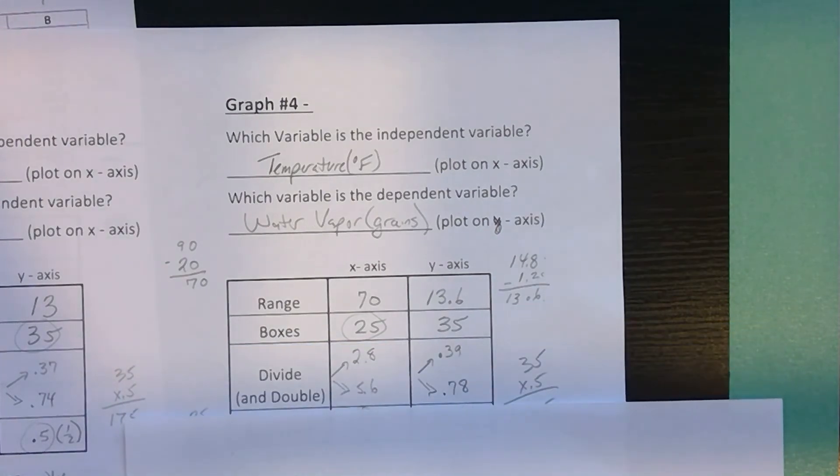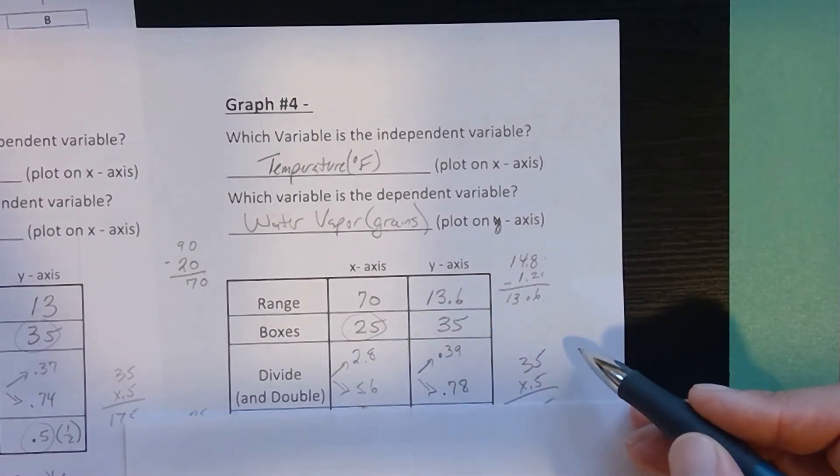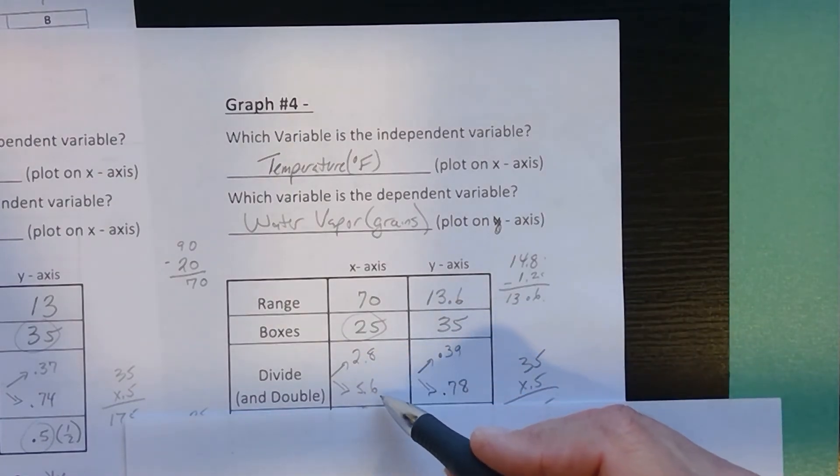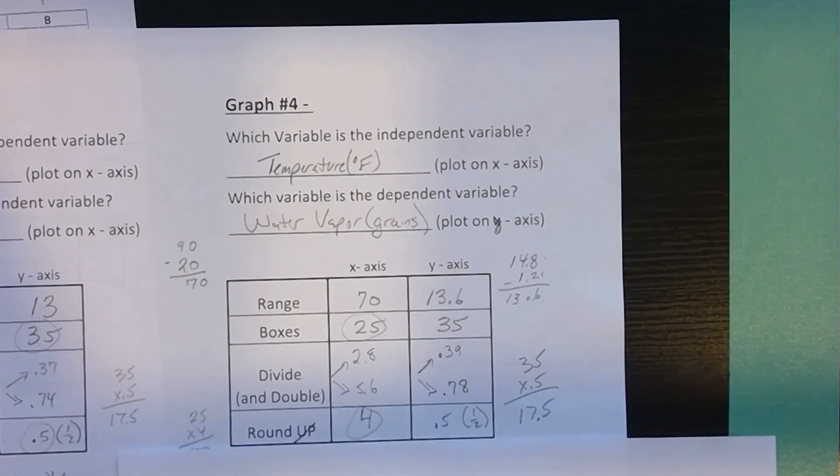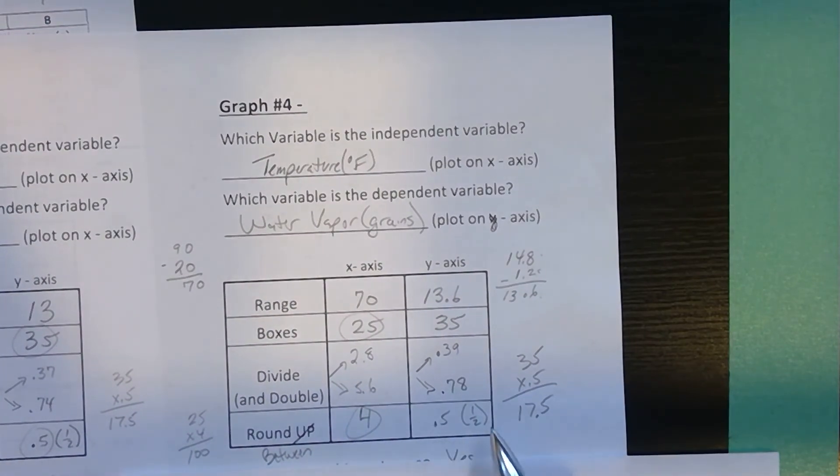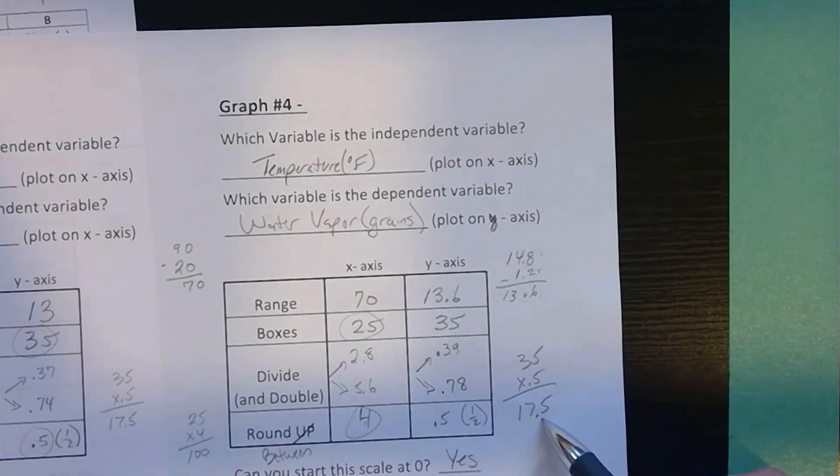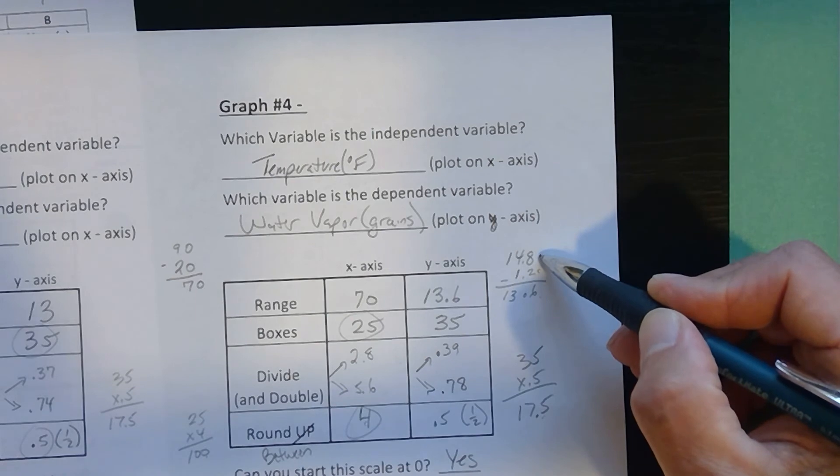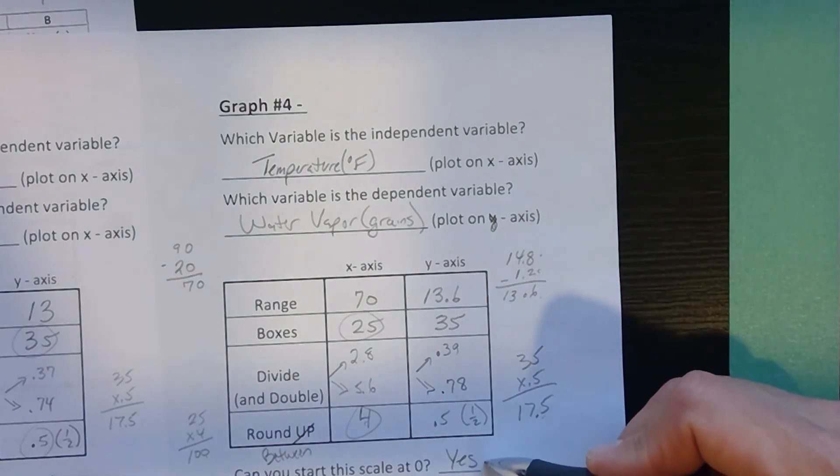When I divide and then double, because neither one is a good number, between 2.8 and 5.6, I could go 4. I could go 5. I think I'm going to go 4 here. It'll stretch the graph out a little more. Between 0.39 and 7.8, definitely, I'm going to go with 0.5. So, I'm rounding, not up. I'm rounding between and getting 4. Here, I'm rounding to 0.5. This one, 25 times 4 gives me up to 100, and I only have to go up to 90. So, I'm okay here. 17.5, my maximum value is 14.8. So, for both of these, I can definitely start at 0.